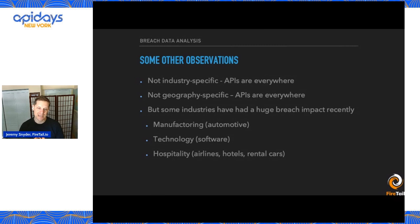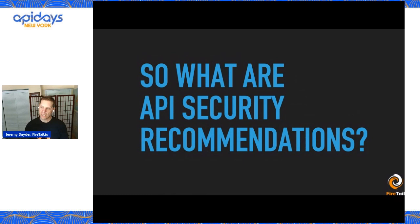Similarly on the hospitality side — think about airlines, hotels, and rental cars. You can book all that stuff direct with the vendor, but there are also all these travel aggregator sites and online travel agencies. Again, broad partner ecosystems with a lot of API communication leads to these API risks.